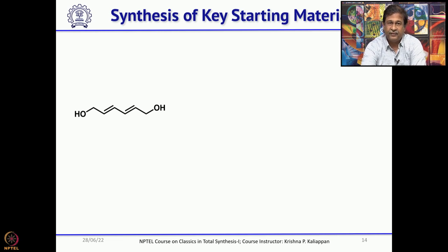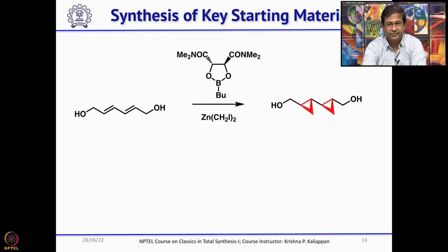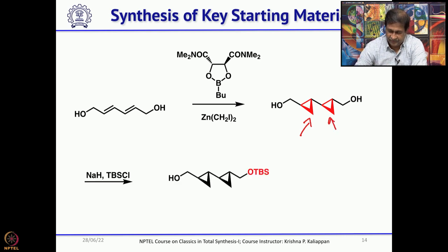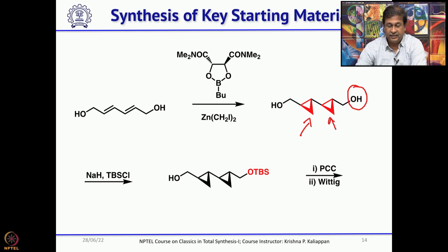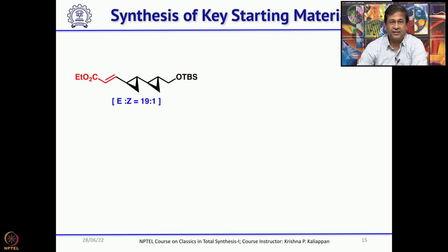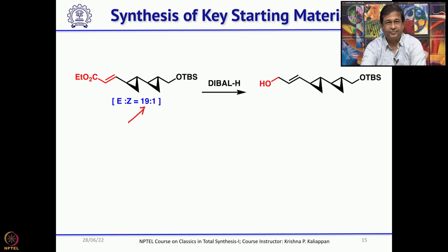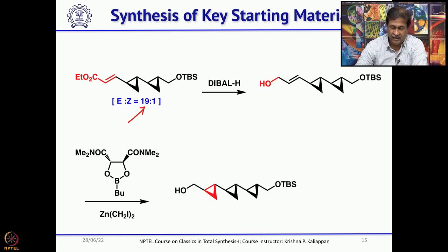The other fragment was started with a diene diol. Using asymmetric Charette cyclopropanation, two cyclopropanes were introduced in one step since the compound is symmetrical. Then one hydroxyl group was selectively protected as a TBS ether. The other alcohol was oxidized to an aldehyde with PCC, then a stabilized Wittig reaction on that aldehyde gave the corresponding α,β-unsaturated ester with an E/Z ratio of 19:1, which are separable. The ester was then reduced to an alcohol with DIBAL, and another cyclopropanation was performed using the same Charette protocol.